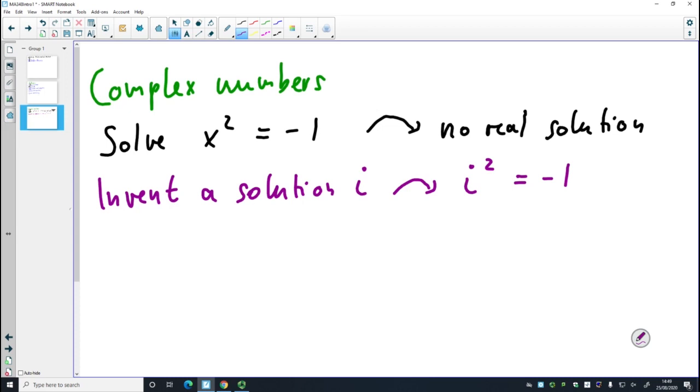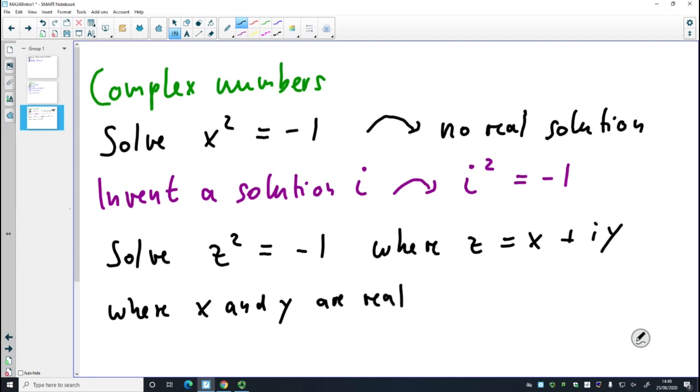What I want is that i² = -1. So now that we have this, we can go back to our equation. Now we solve z² = -1, where z = x + iy, and x and y are real. Then the solutions are, so now I have two solutions, and these two solutions are just going to be plus and minus i. So by doing this, I've come up with a solution to this equation.